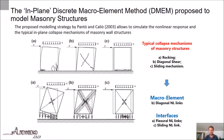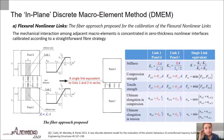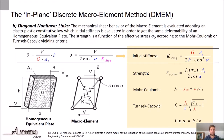The computational cost of the proposed numerical approach is greatly reduced in comparison to that involved in traditional non-linear finite element simulation. In particular, the mechanical interaction among adjacent macro-elements is concentrated in zero-thickness non-linear interfaces, calibrated according to a straightforward fibre strategy. The mechanical shear behaviour of the macro-element is evaluated adopting an elastoplastic constitutive law, whose initial stiffness is evaluated in order to get the same deformability of a homogeneous equivalent plate. The strength is a function of the effective strength, according to the Mohr-Coulomb or Turnsek-Kovic yielding criteria.